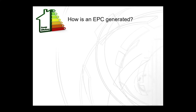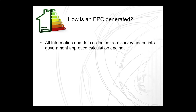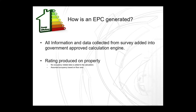So how is an EPC generated? All information and data collected from the survey is added into a government-approved calculation engine, and a rating is then produced on the property. It is worth noting that no occupancy-related data is added to the calculation; the software assumes occupancy based on the floor area, which could perhaps lead to some inaccuracies. There are, however, suggestions that in the future occupancy-related data could be included within the software.